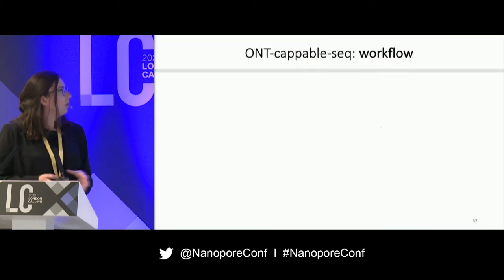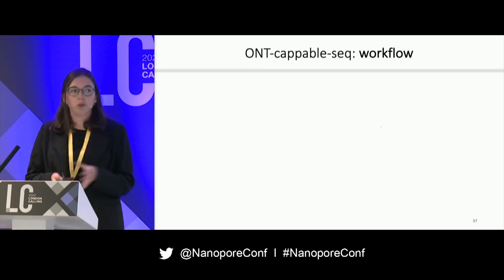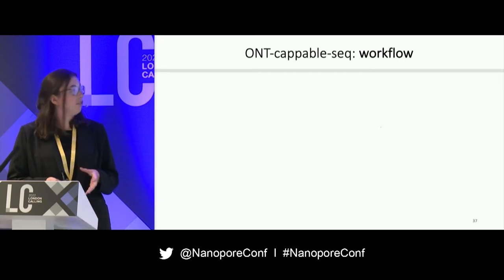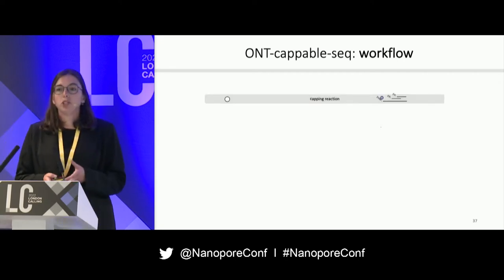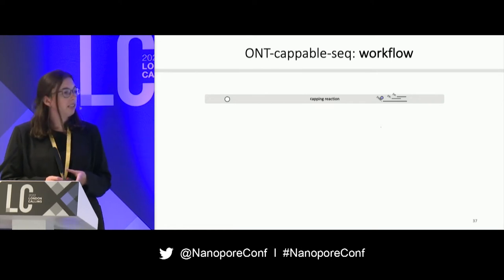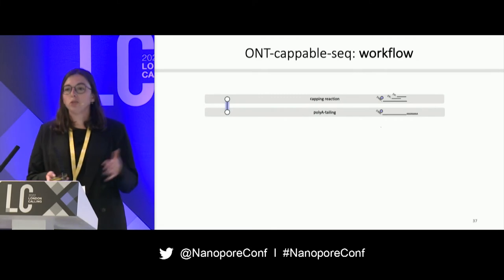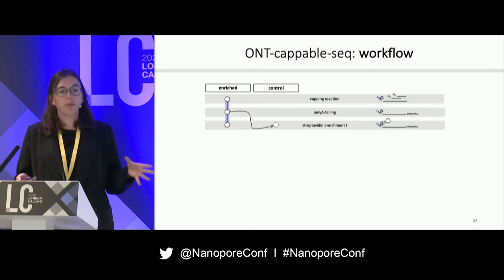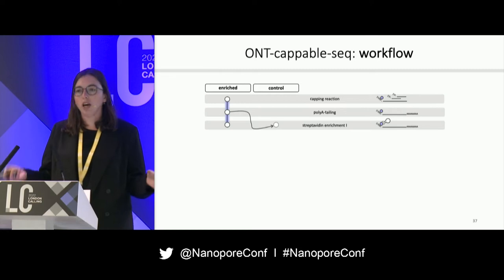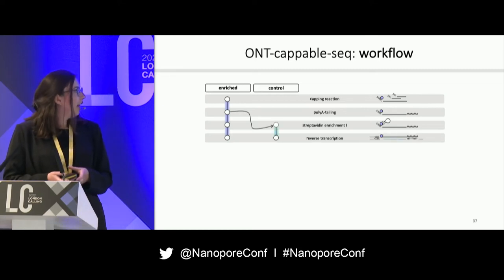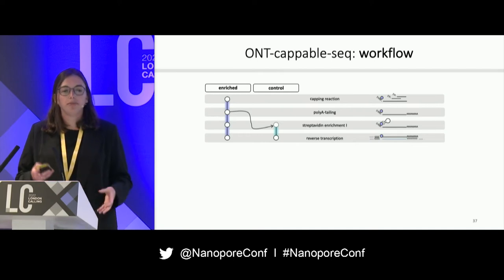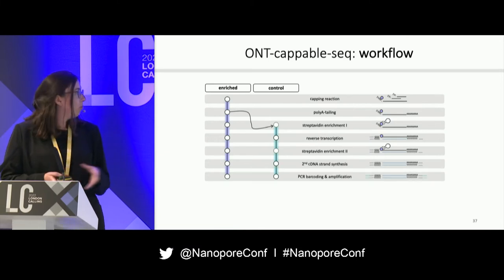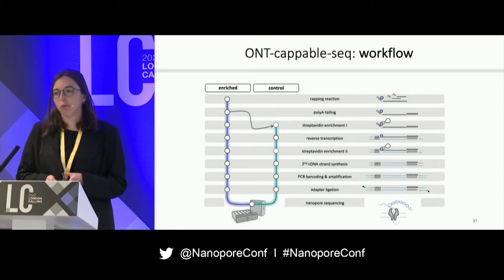We are calling our approach ONT-CAPSEQ. We started by extracting RNA at different stages during phage infection, then enriched for primary transcripts using the CAPSEQ method. We then implemented an in vitro polyadenylation step to make the samples compatible with the nanopore platform, split the sample in two — one enriched, one serving as control — reverse transcribed them, PCR amplified using the cDNA-PCR barcoding kits from Nanopore, multiplexed the samples, and loaded them onto a PromethION flow cell.